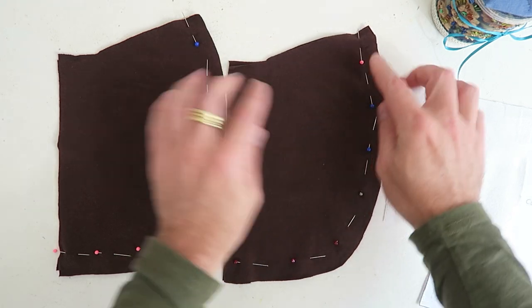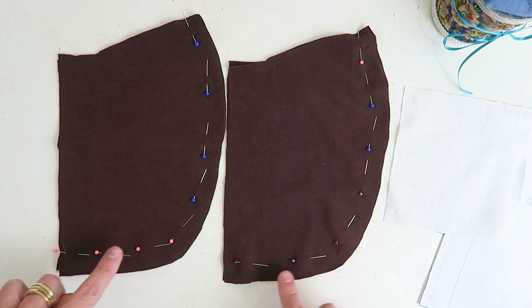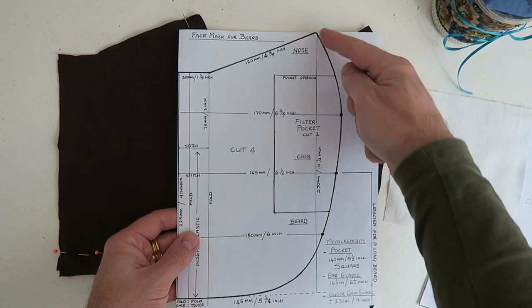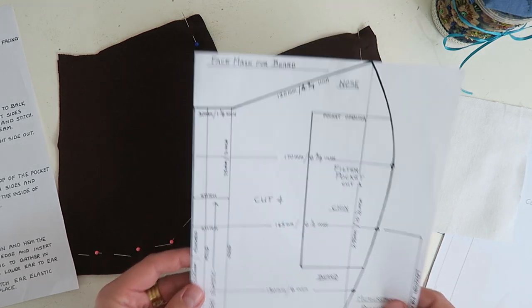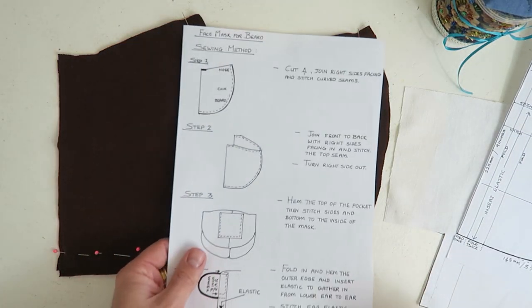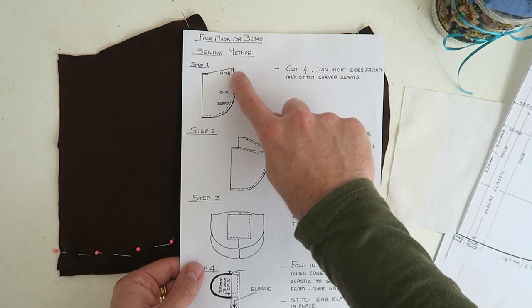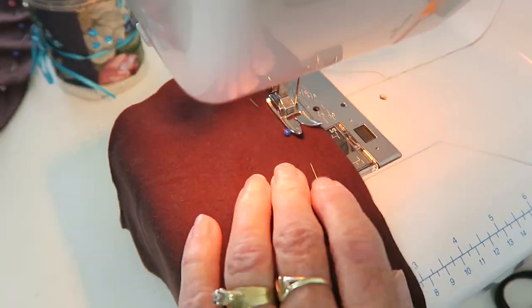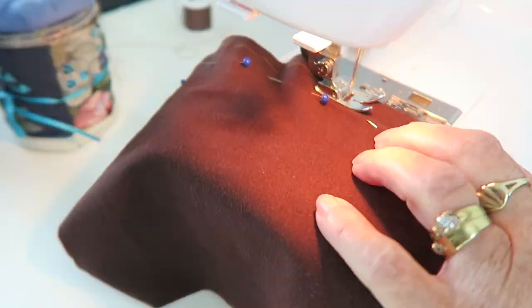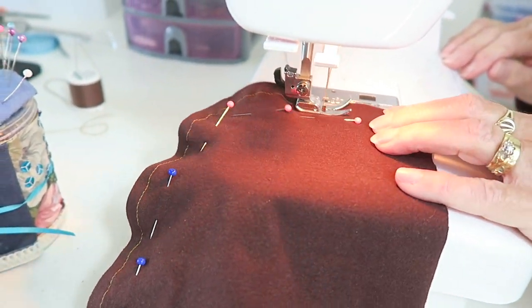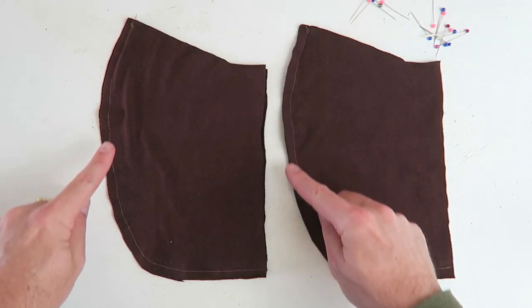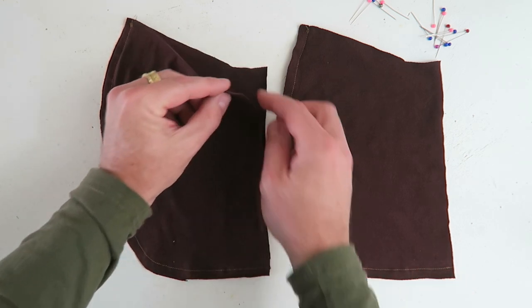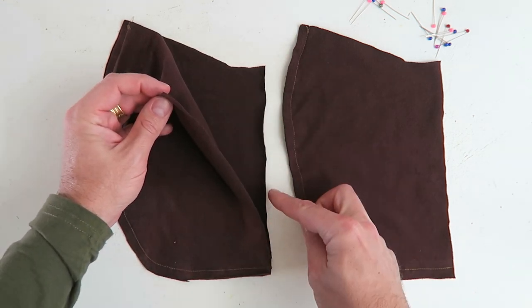We have two pieces over here and two pieces over here. Now we're going to pin these together. We've pinned it on the curved end and basically according to the pattern we'll stitch on that curved end. If you look at the printable instructions, you'll see step one is sew on the curved side. For this mask and pattern you can sew by hand or by machine.